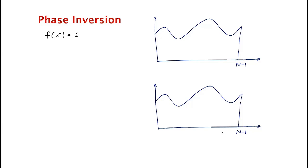At any iteration, what the algorithm maintains is a superposition over all x — some superposition, sum over all x of alpha_x times |x⟩. Initially we have no idea which value x we are looking for, so initially all these alpha_x's are going to be equal, and equal to 1 over square root of n.